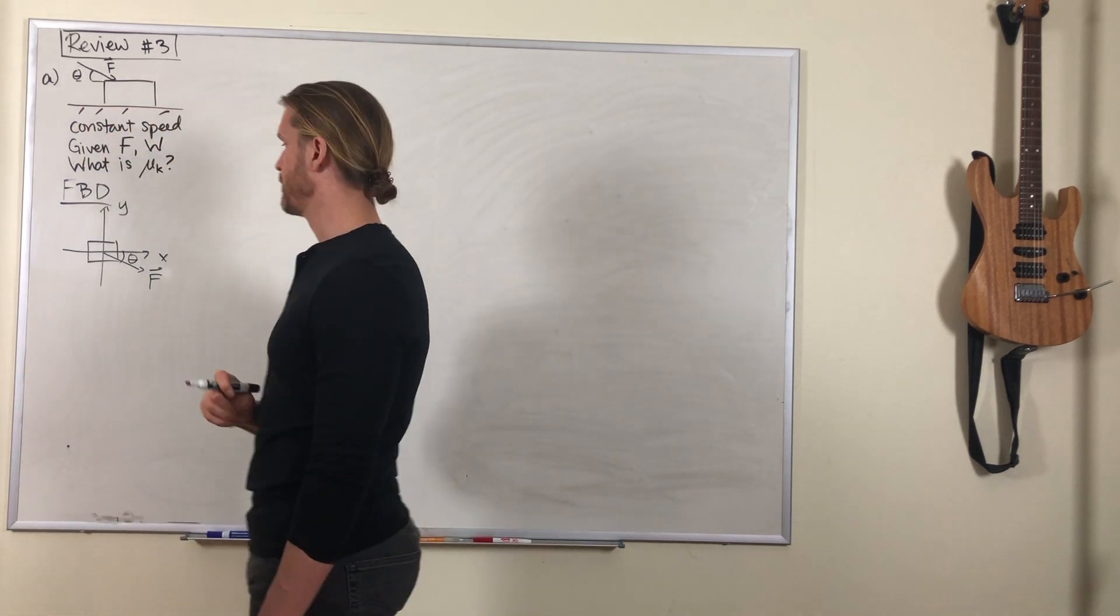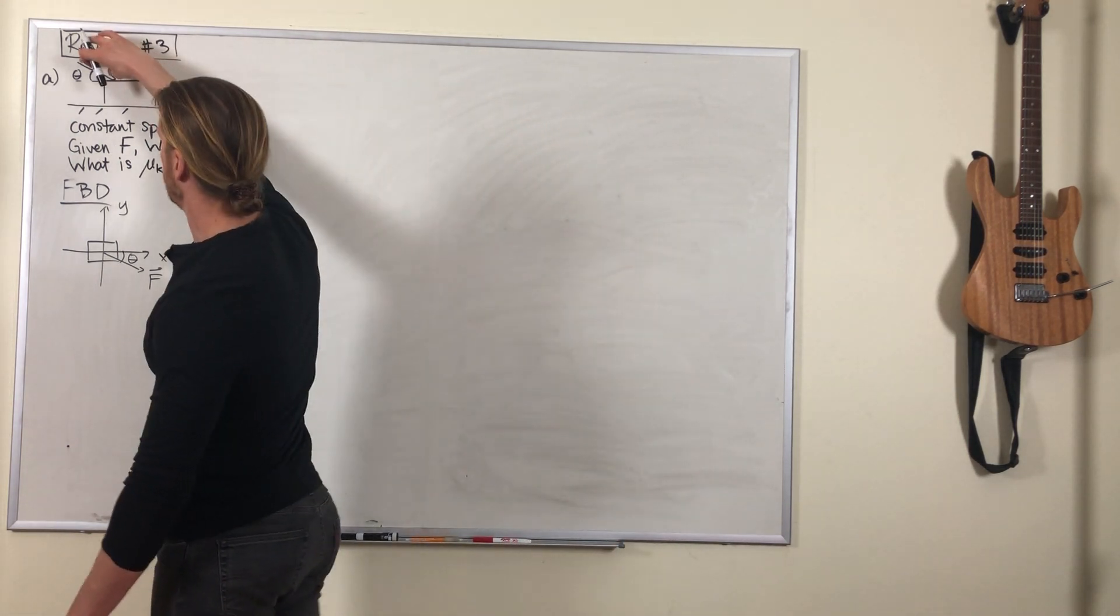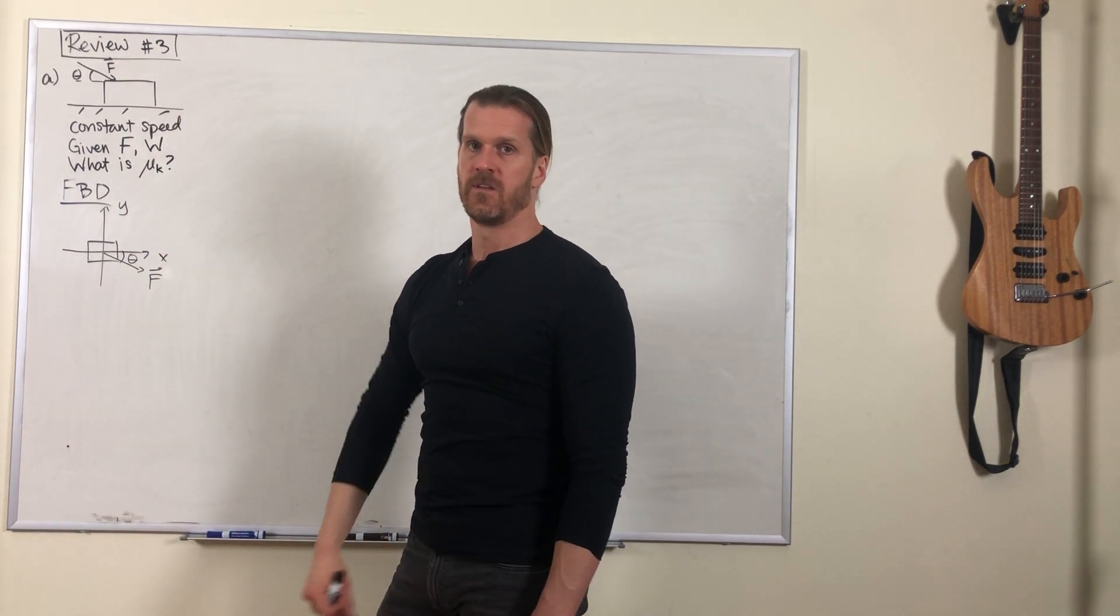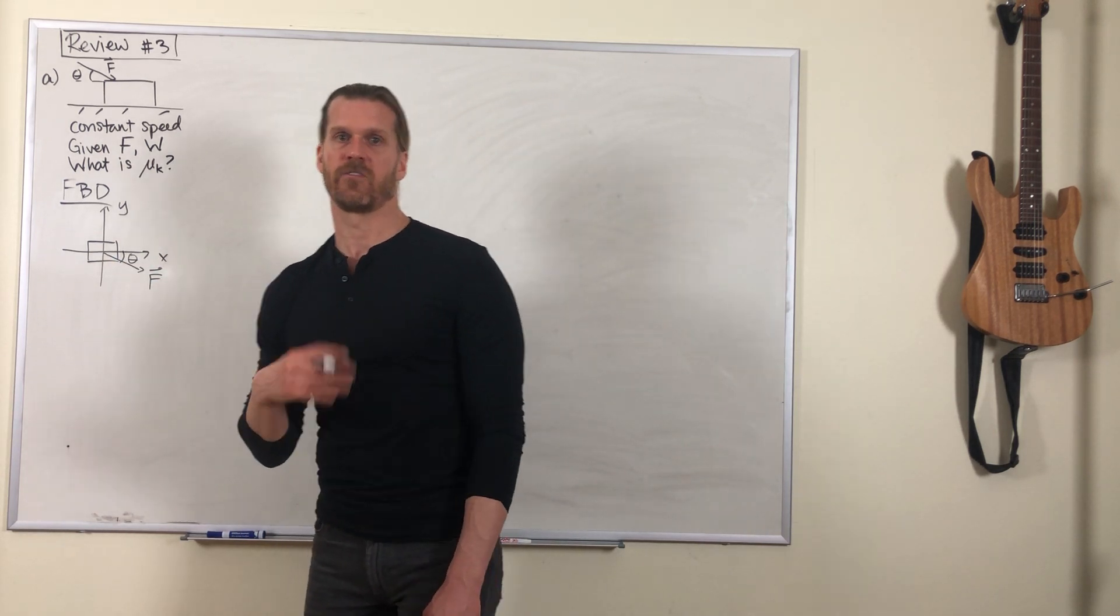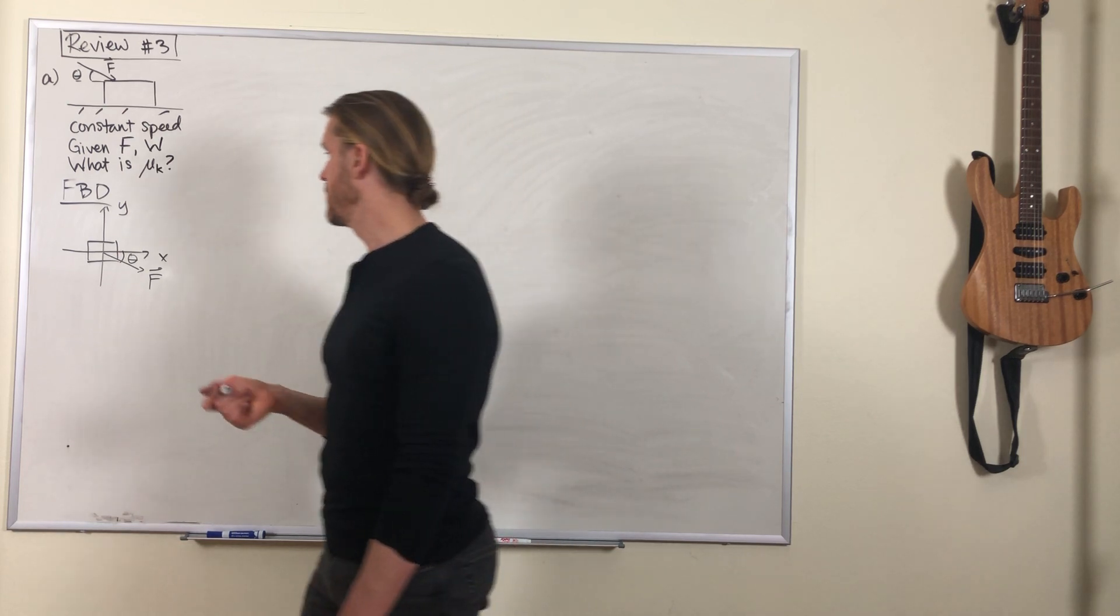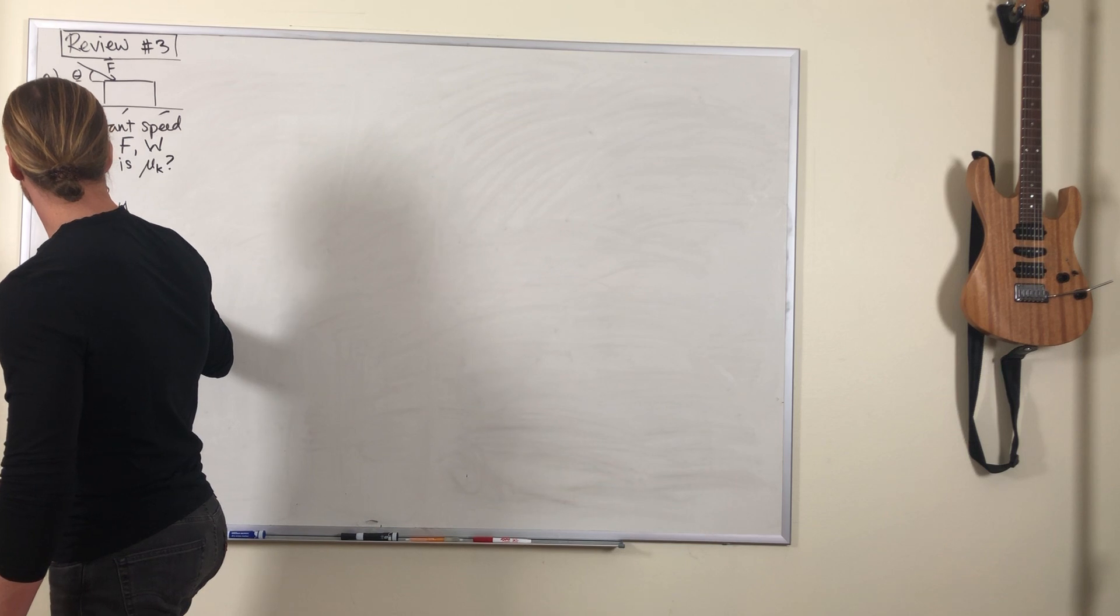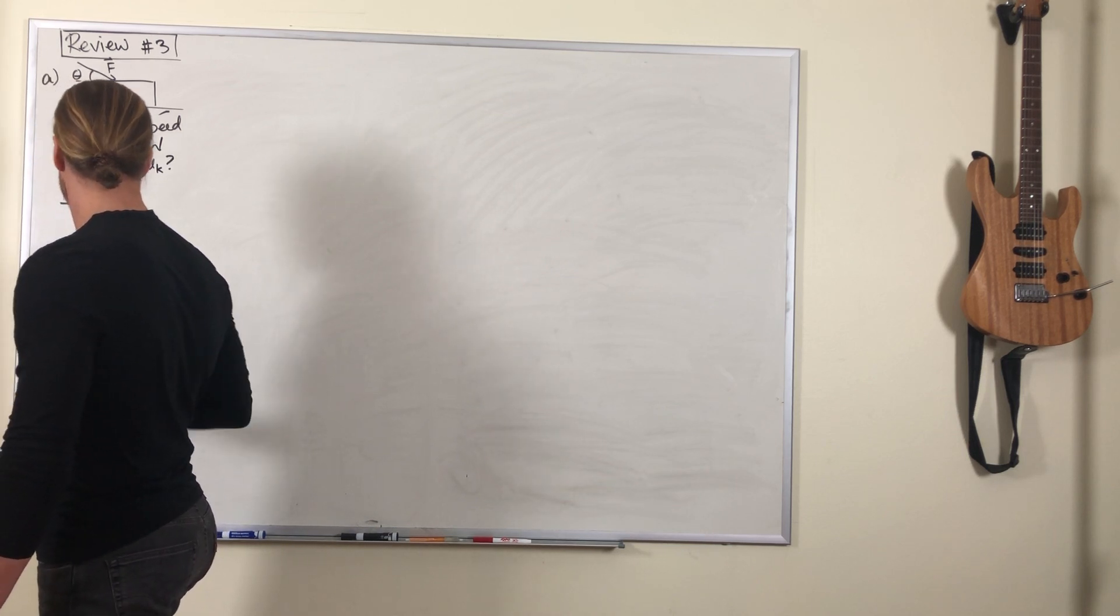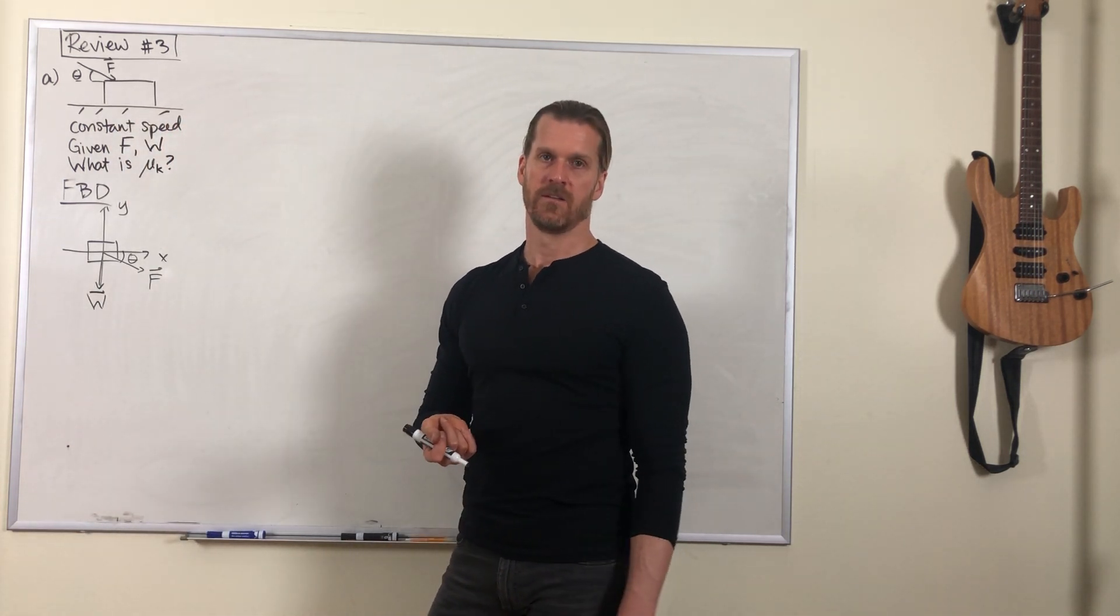Theta below the horizontal. Remember it doesn't matter where in the picture you draw a vector as long as the direction and magnitude are correct, but it's most convenient in free body diagrams to draw the vectors coming from the center of the object. We've got a gravity force W, that is the weight of the box.